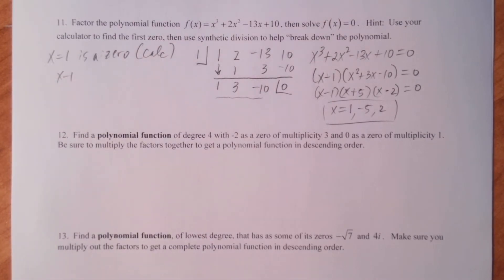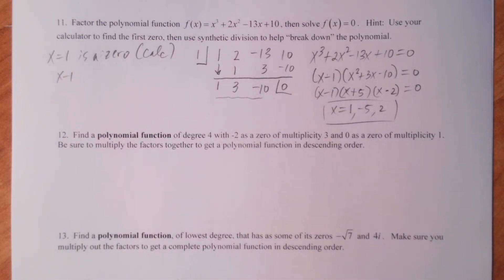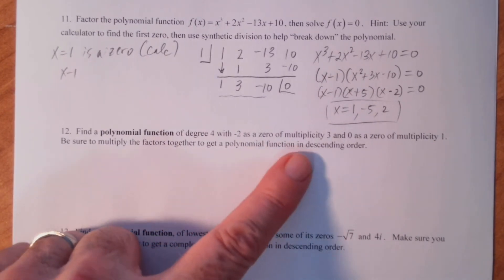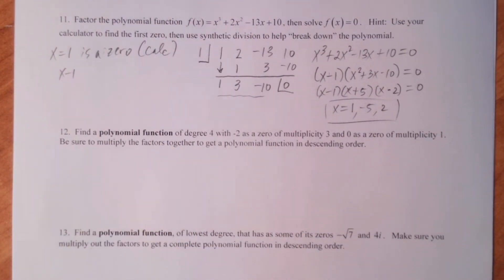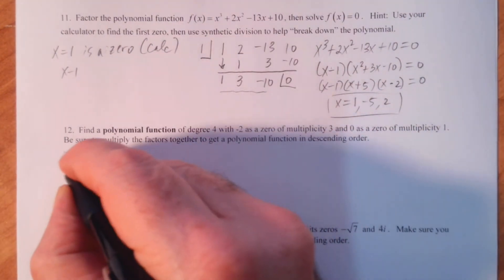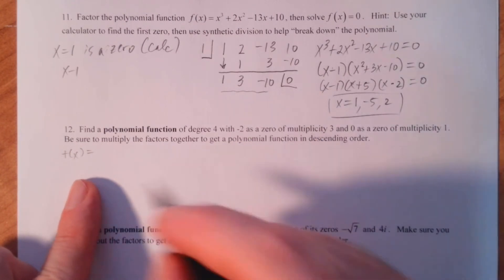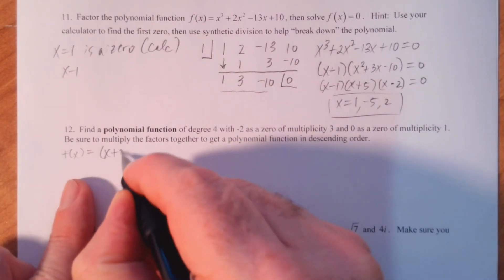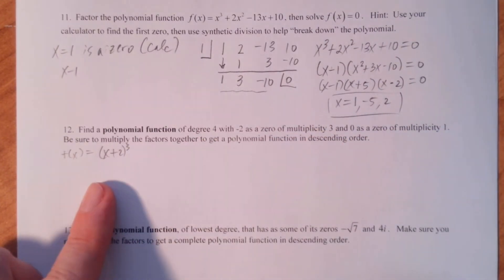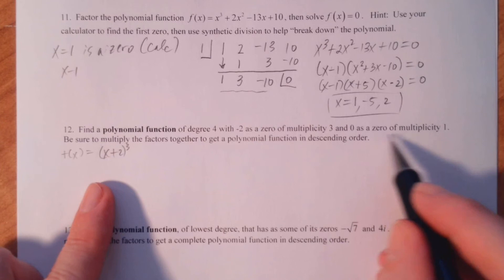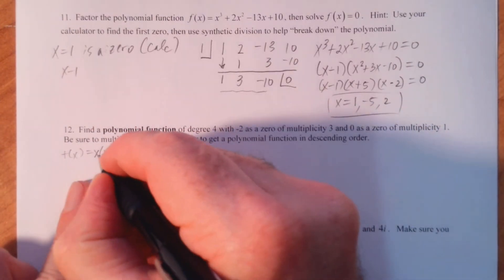Number 12: find a polynomial function of degree four with negative two as a zero of multiplicity three and zero as a zero of multiplicity one. Be sure to multiply the factors to get a polynomial function in descending order. So f of x equals — if negative two is a zero of multiplicity three, that means x plus two is a factor and it's cubed. Since zero is a zero of multiplicity one, we also multiply by x.